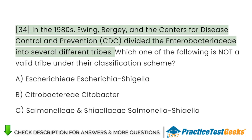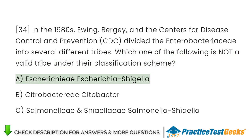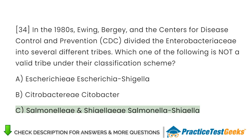In the 1980s, Ewing, Fife, and the Centers for Disease Control and Prevention (CDC) divided the Enterobacteriaceae into several different tribes. Which one of the following is not a valid tribe under their classification scheme? A. Escherichieae (Escherichia, Shigella). B. Citrobactereae (Citrobacter). C. Salmonelleae and Shigelleae (Salmonella, Shigella).